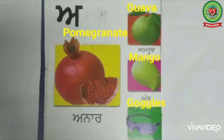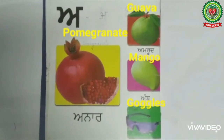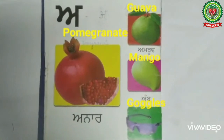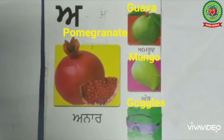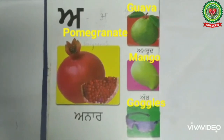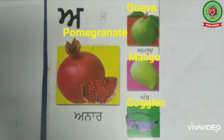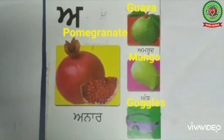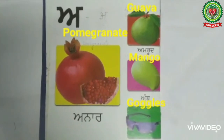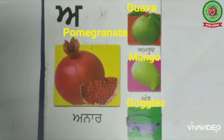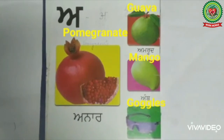Now if I ask you to read this page, how will you read? Let's read together: Ada, A — Anar, Anar means pomegranate. Ada, A — Amrood, Amrood means guava. Ada, A — Aimb, Amba means mango. Ada, A — Anak, Anak means goggles.